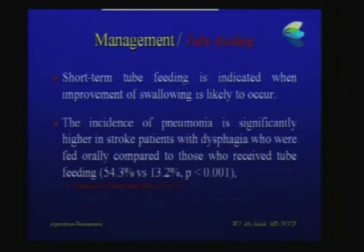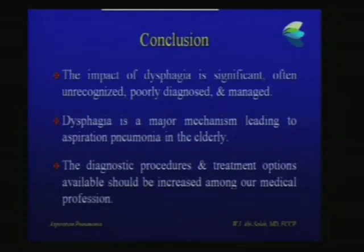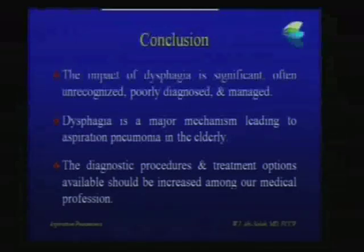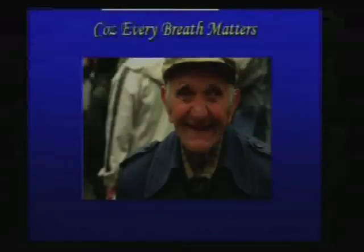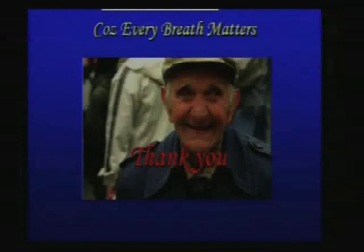It should be noted that in acute stroke, the incidence of aspiration pneumonia is much higher with oral feeding than with NG tube feeding — so the data about tube feeding not helping applies to chronic end-stage illnesses, not acute illnesses where the patient is hopefully going to get better. In conclusion, the impact of dysphagia is quite significant, often unrecognized, poorly diagnosed, and poorly managed in the elderly. Dysphagia is a major mechanism leading to aspiration pneumonia and should be addressed properly through available diagnostic procedures and treatment options across our medical profession.